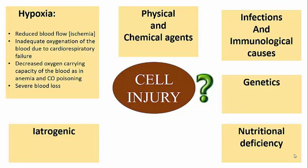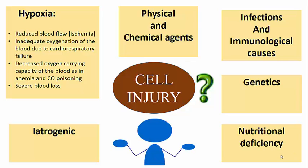Cell injury can also be iatrogenic — meaning cell injury from accidental administration of certain drugs. In some instances, despite knowing many etiological factors, you just cannot determine what exactly resulted in a particular cell being injured; that is called idiopathic. So in summary, the various causes of cell injury are: hypoxia, physical, chemical, infectious, immunological, genetics, nutritional, iatrogenic, and idiopathic.